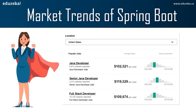A Java developer with knowledge of Spring Boot earns around $100K, a senior Java developer earns around $119K, and a full stack developer earns a whopping amount of around $100K as well. So anyone can start learning Spring Boot.